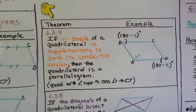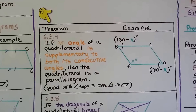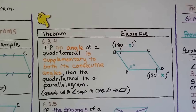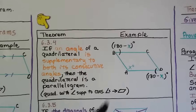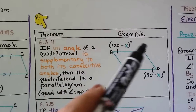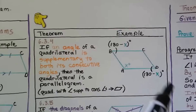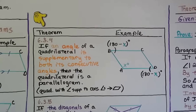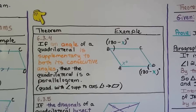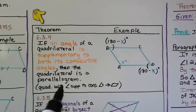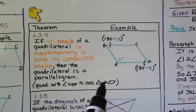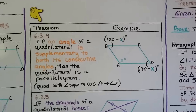Theorem four: if an angle of a quadrilateral is supplementary to both of its consecutive angles, then the quadrilateral is a parallelogram. So angles A and B together equal 180, B and C together equal 180, C and D equal 180, and D and A equal 180 — they're supplementary and consecutive. In geometric notation: quadrilateral with an angle supplementary to its consecutive angles, therefore parallelogram.